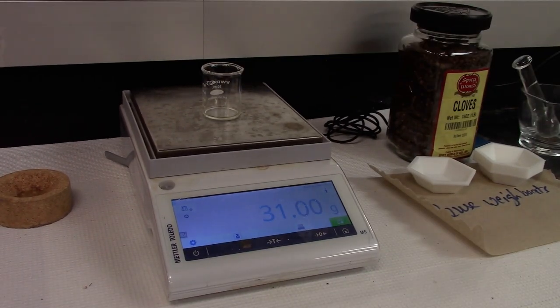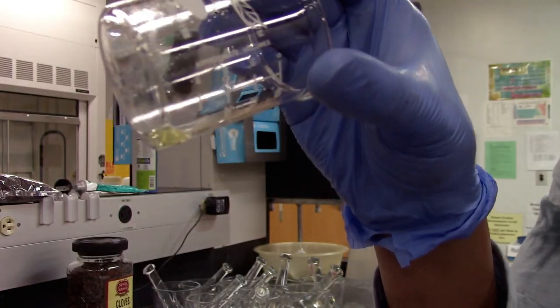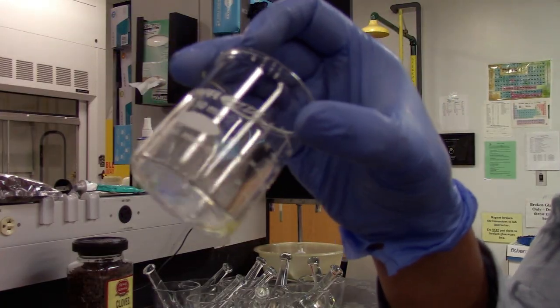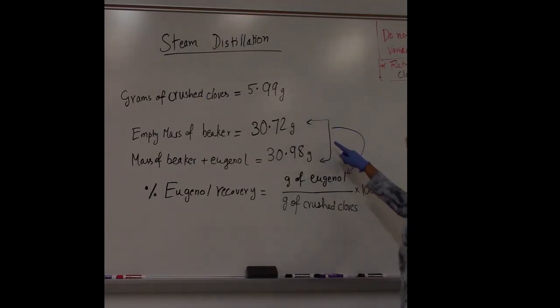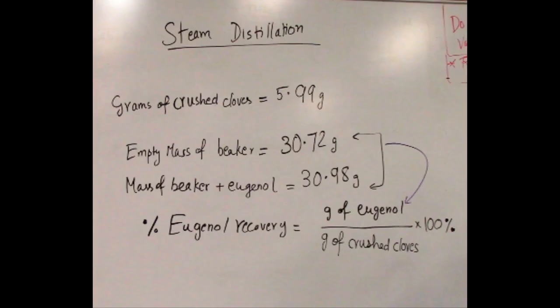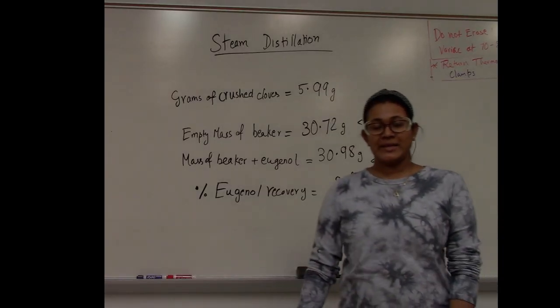Go ahead and weigh the beaker with eugenol. At the end of the lab, we were able to extract eugenol from steam distillation. The difference between the mass of the beaker with eugenol and empty mass of the beaker will give you the grams of eugenol. And with this, find the percent recovery of eugenol. Thank you.